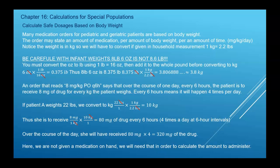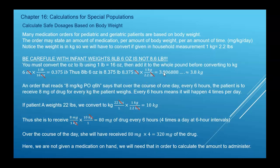Be careful with your infant weights. Eight pounds, six ounces does not mean 8.6 pounds. Six ounces would have to be converted to pounds — your conversion factor is one pound for every 16 ounces — which gives 0.375 pounds. So eight pounds plus 0.375 pounds is 8.375 pounds. Then we convert that to kilograms and get approximately 3.8 kilograms.